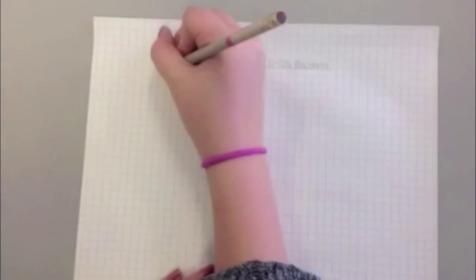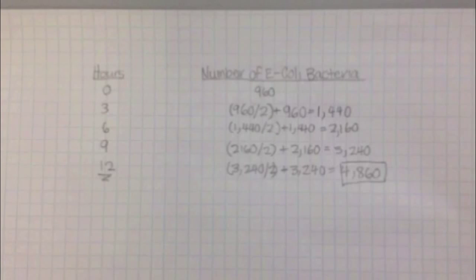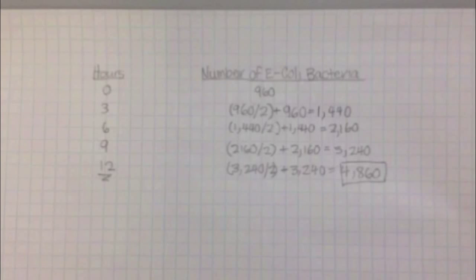This is our chart. Every 3 hours, the number from before increases at a rate of 50%. In the beginning, or 0 hours, there were 960 bacteria.